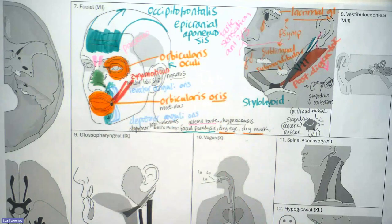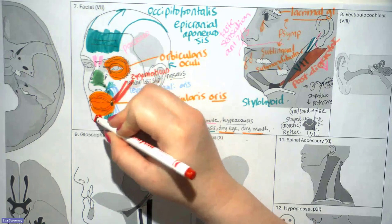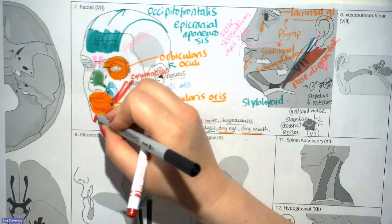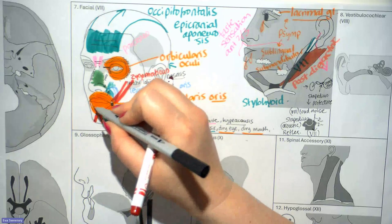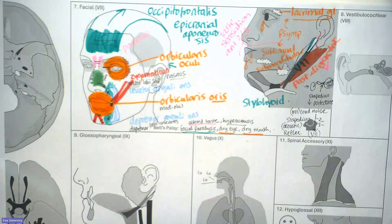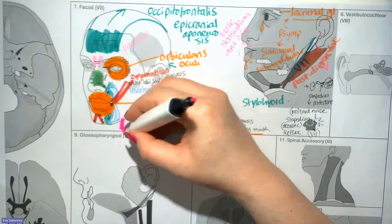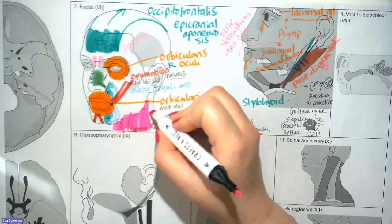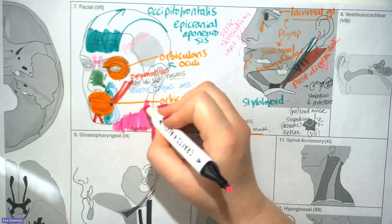The mentalis attaches to the skin of the chin inferiorly and goes up to attach to the mandible. By contracting, it pulls the skin of the chin up, helping to protrude the lower lip and causing dimpling on the skin of the chin. The platysma goes from the tissues overlying the clavicle up to the mandible and the skin over it. It can tense the skin of the neck and help open the mouth by depressing the mandible — important for conveying frustration and anger.